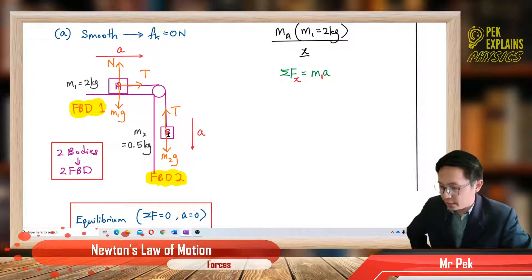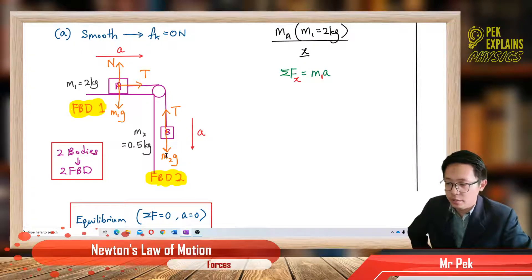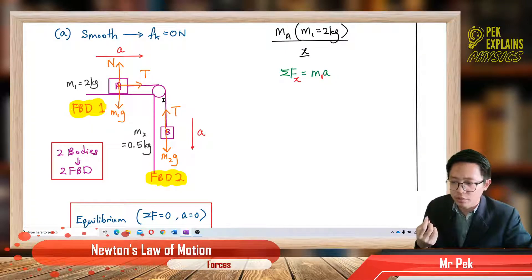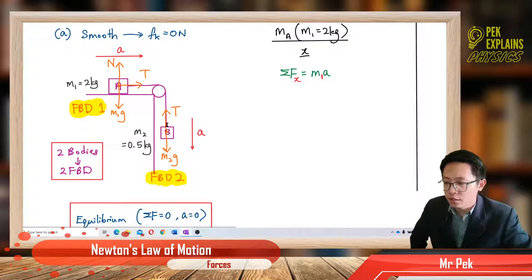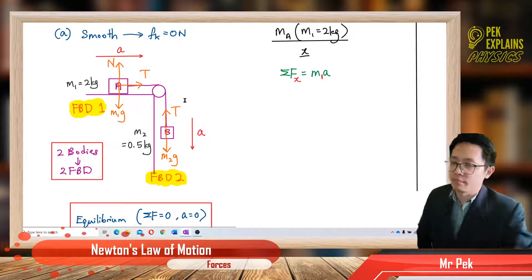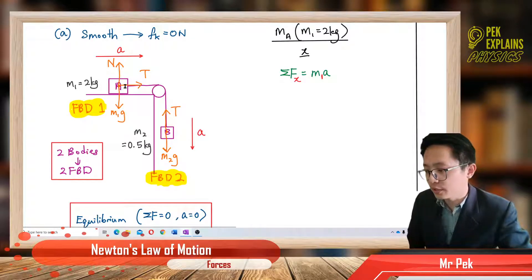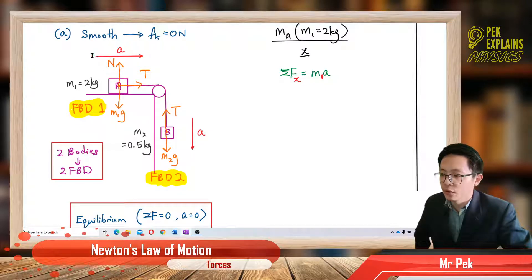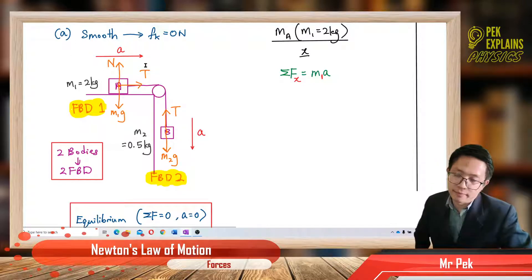For object B, the forces acting on B: its own weight, M2g, going down. A is actually holding on B, so B feels the tension going upward — the string is pulling on B upward. For Part A, A has no friction, so no need to draw friction. B accelerates downward, and A follows the direction of B, accelerating to the right.